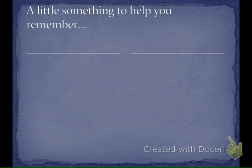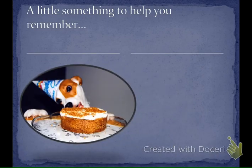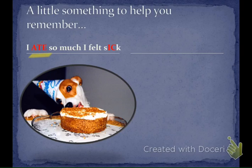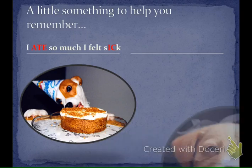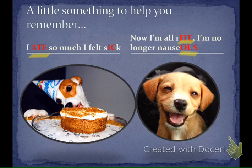Here's a little memory device — it has to do with a little doggy. This little doggy ate so much he felt ick. That helps you remember: if it ends in '-ate,' we change it to '-ic.' After he took some Pepto-Bismol, he's all right — '-ite,' he's no longer nauseous — '-ite' goes to '-ous.' So: '-ate' → '-ic'; '-ite' → '-ous.'